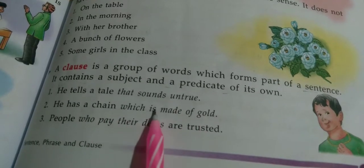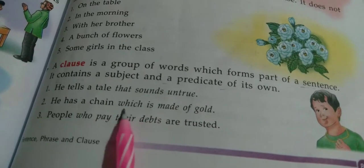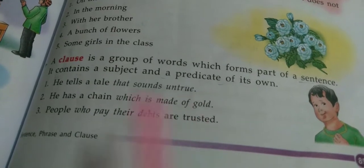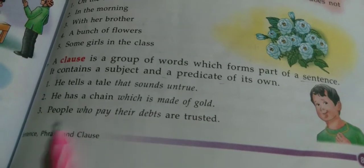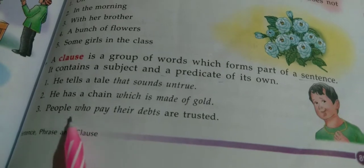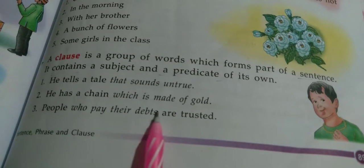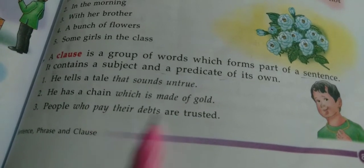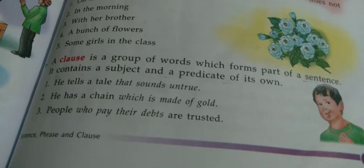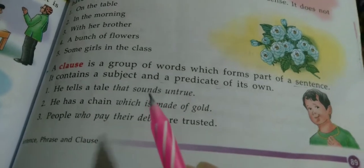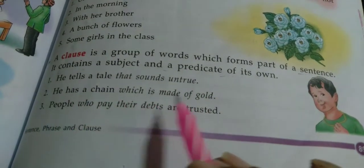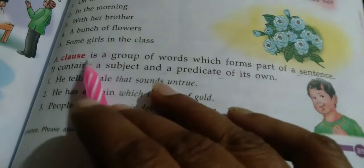'Which is made of gold' is a clause. 'People who pay their debts are trusted' — 'people who pay their debts' is the subject and 'are trusted' is the predicate. A group of words which has its own subject and predicate is called a clause.